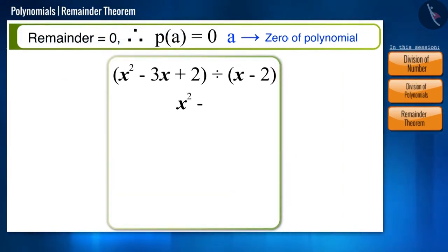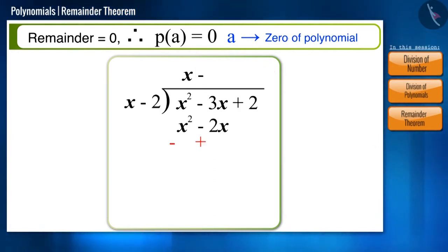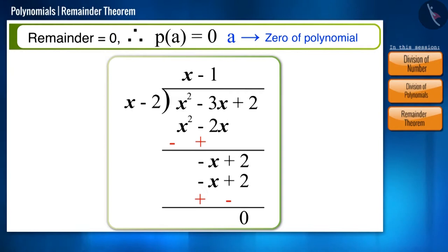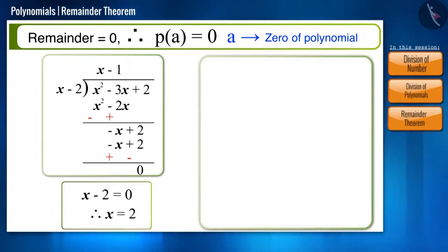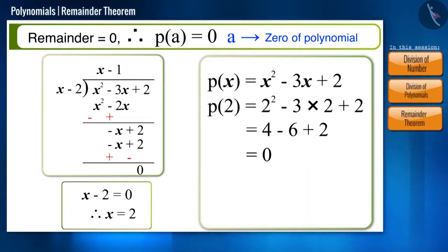Let's look at an example for this. On dividing the polynomial x squared minus 3x plus 2 by x minus 2, we get the remainder as 0. By equating the divisor x minus 2 to 0, we get x equals 2 and p of 2 will be 0. That means 2 is the zero of this polynomial.